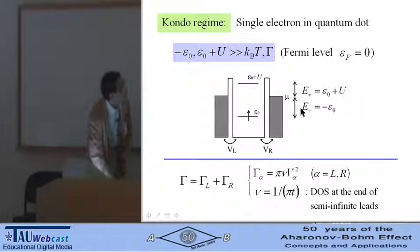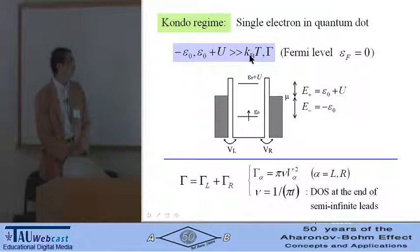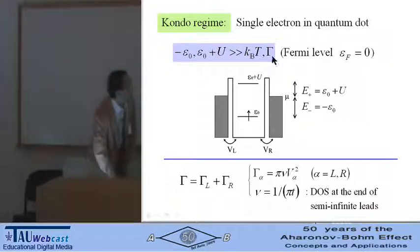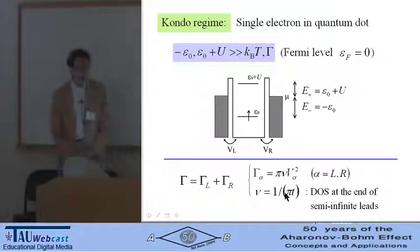That is, addition energy of the single electron on the quantum dot and also the extraction energy from the quantum dot are much larger than the thermal fluctuation and level broadening gamma. Gamma is given by this equation, and nu is the density of state in the lead.